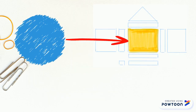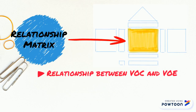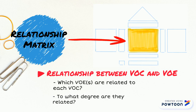Third, the relationship matrix. Each VOC can be related to at least one engineering parameter. The relationship can be strong, medium, or weak. Relationships are expressed in symbols with corresponding values that will be used to compute for technical parameter weights.